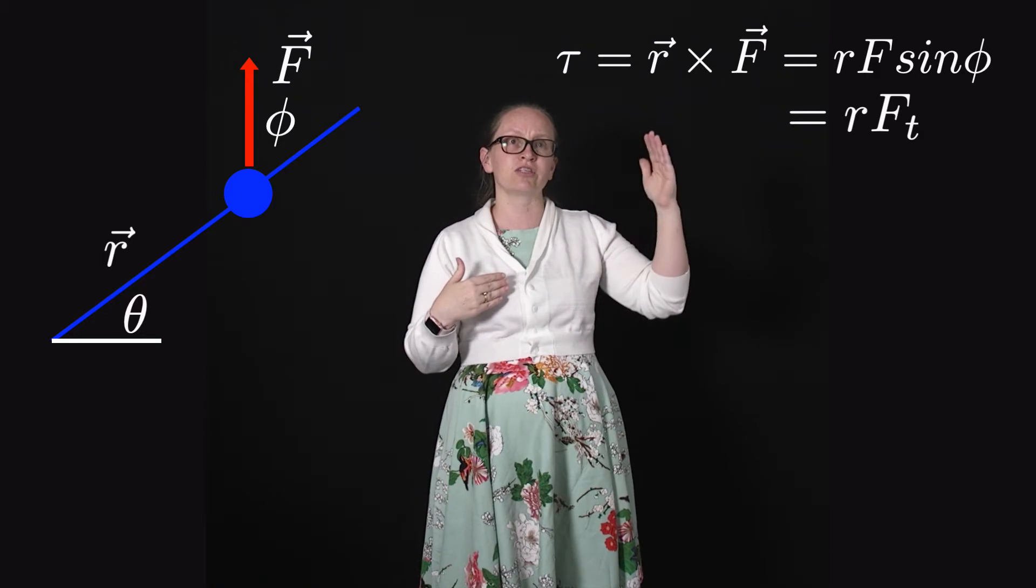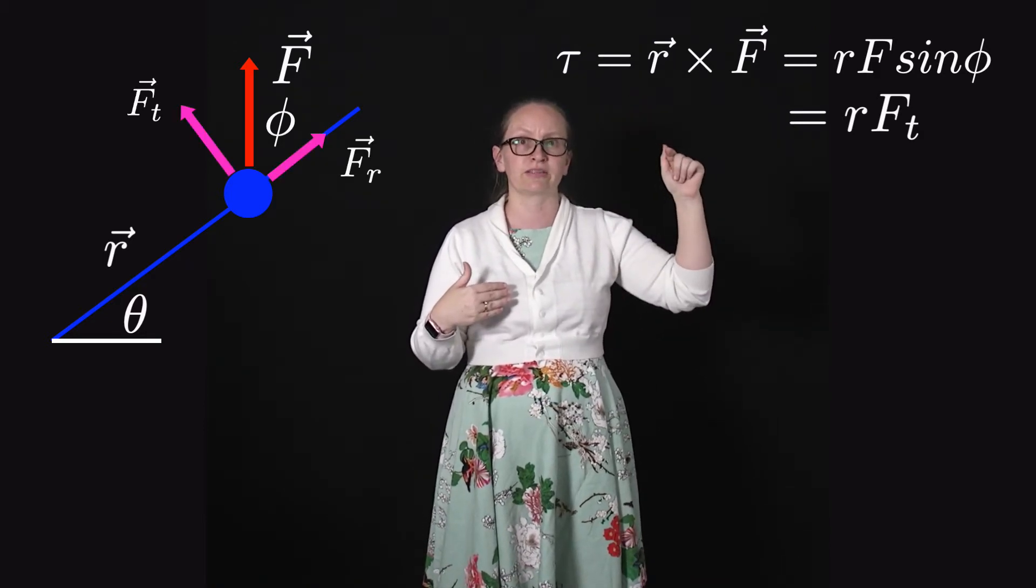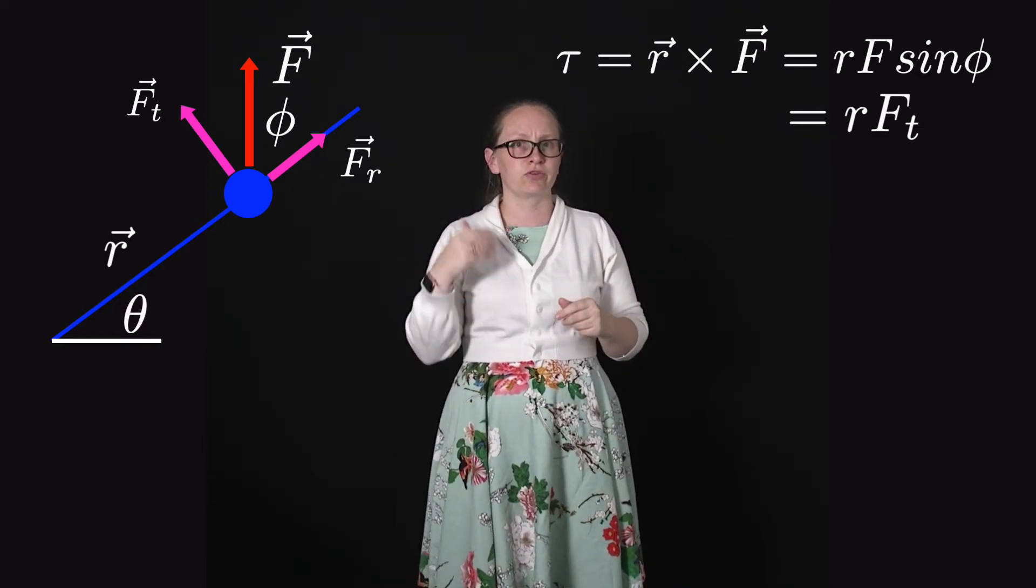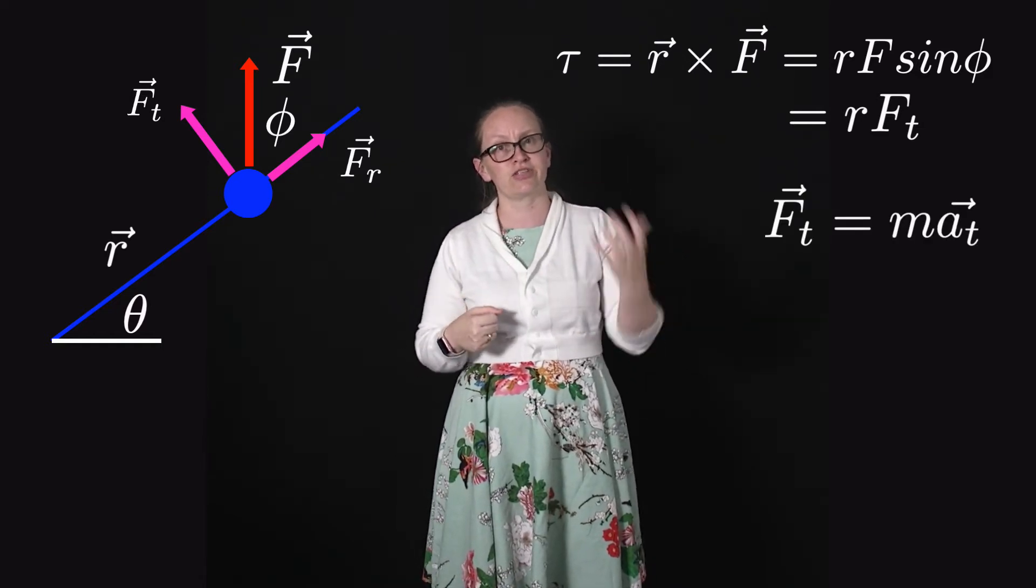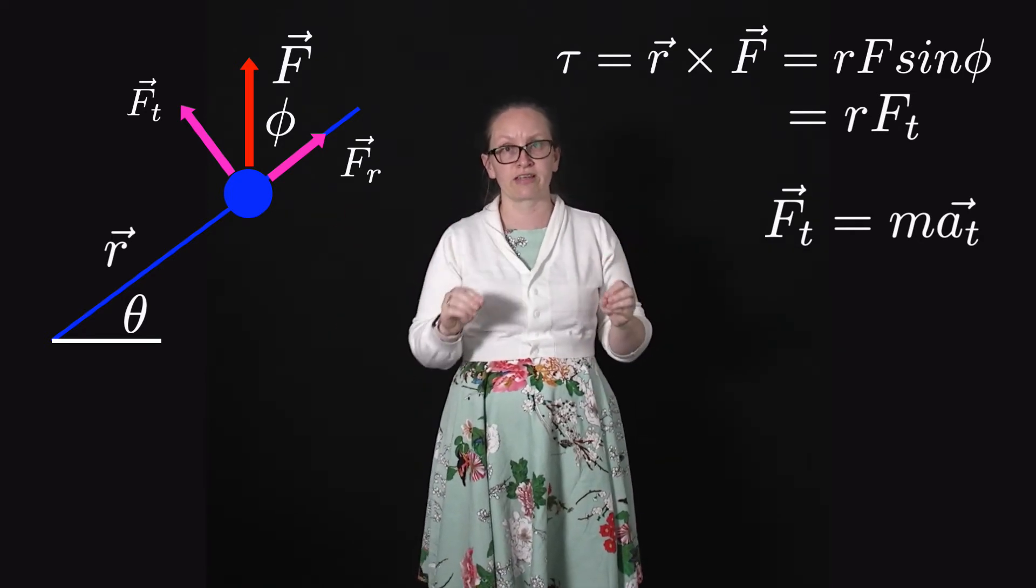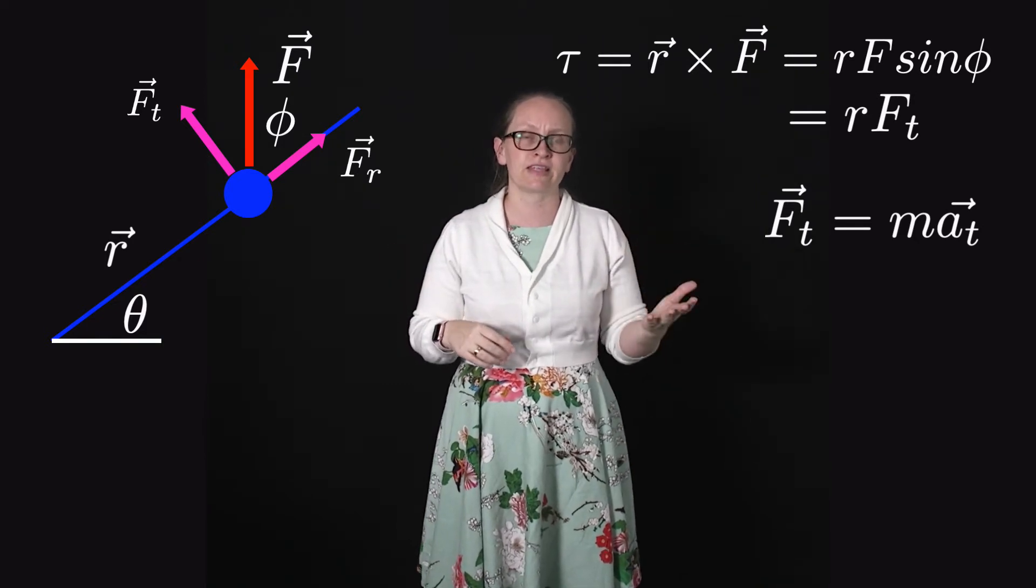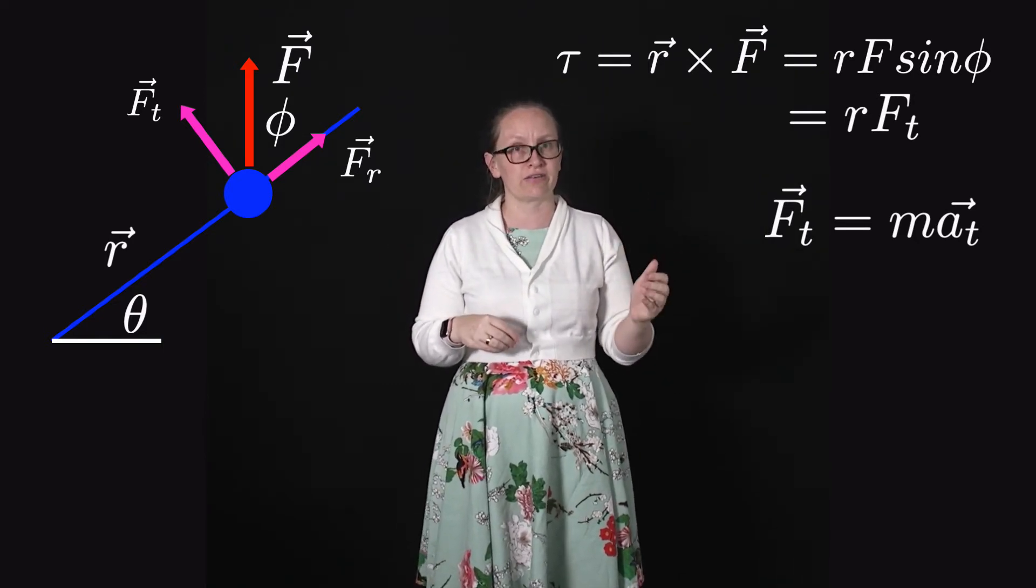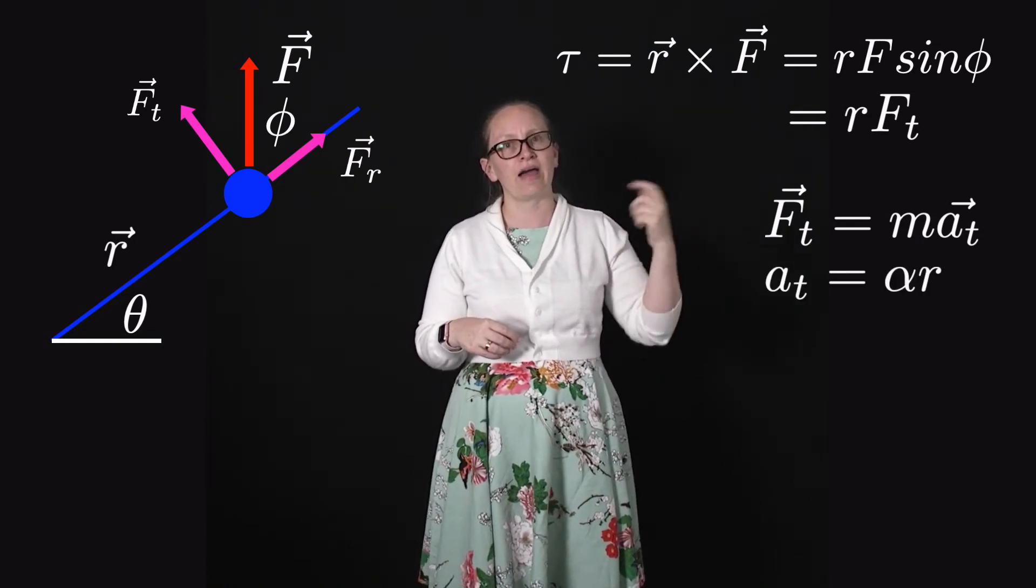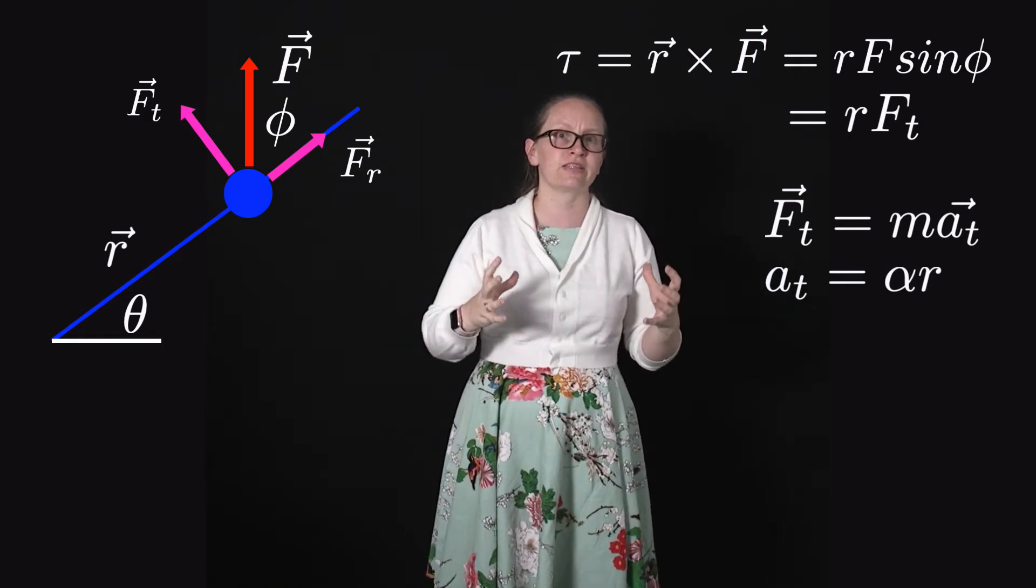We can break that force into a radial component and the tangential component. So the tangential component of the force is equal to the mass times the tangential component of the acceleration. That's just an application of Newton's second law for the translational case. And we have seen that the tangential acceleration is given by alpha times r, where alpha is the angular acceleration. So let's put all of these together now.